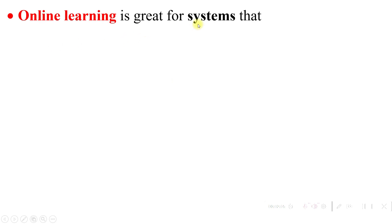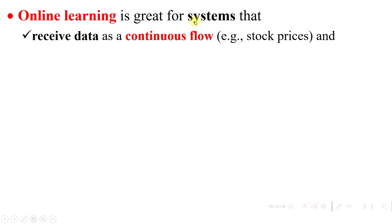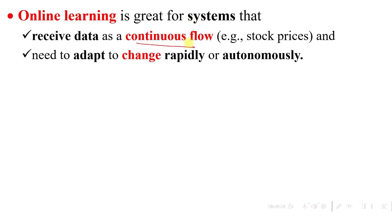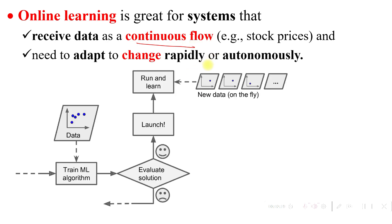Online learning is great for systems that receive data as a continuous flow, like stock prices, and need to adapt to changes rapidly and autonomously. For example, we might develop a model for stock price prediction where there is a continuous stream of data.